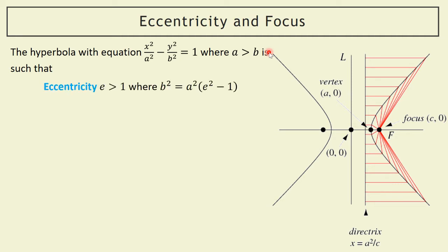The eccentricity is greater than one, and in this case we've got b squared equals a squared times (e squared minus 1). That's changed ever so slightly from the ellipse — you might want to flip back and compare — but we've still got b's, a's and a 1 in there. Because e is greater than one, when we square it we get something bigger than one, and when we subtract one away from it, b squared comes out from there.